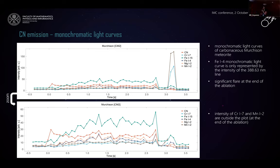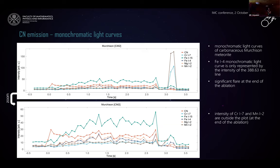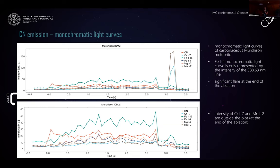In the next slide, we can see monochromatic light curves for the Murchison meteorite. I compare the CN emission to the flaming line, two iron multiplets, the magnesium line, and also manganese. We can see again that early emission of CN starts at the beginning of the ablation because it is a low-excitation line. One thing I would like to highlight is a significant flare at the end of the ablation, which is probably caused by release of a droplet of molten material with some specific composition — notably rich in chromium and manganese, though we don't yet know why.